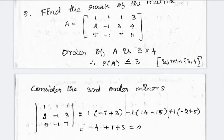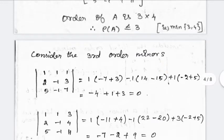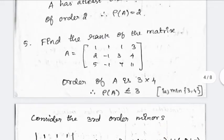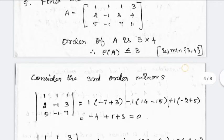Here is a 3×4 matrix. The rank of the matrix is less than or equal to minimum of 3 and 4, which is 3. So rank is less than or equal to 3. That's why we will check the third-order minor first. Let's see the third-order minor using columns 1, 2, 4 — value is 0. Then columns 2, 3, 4 — value is 0.